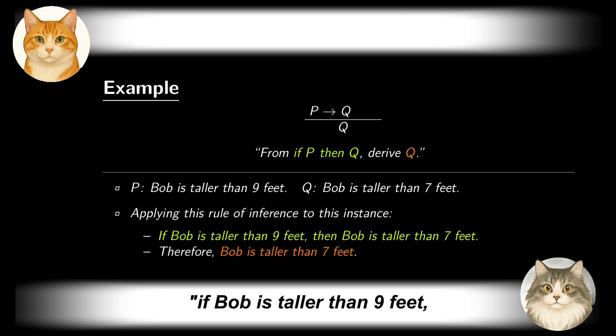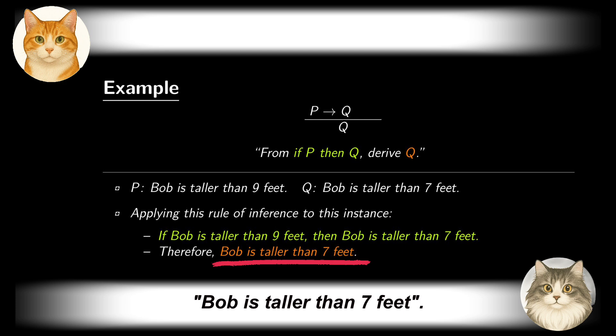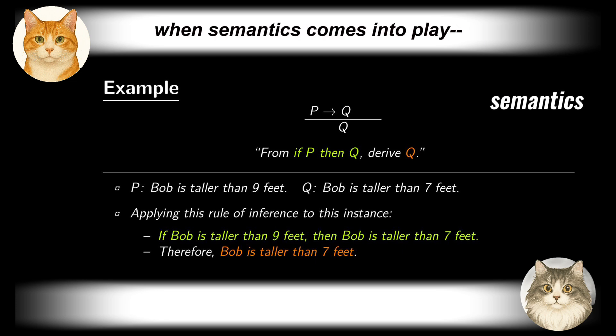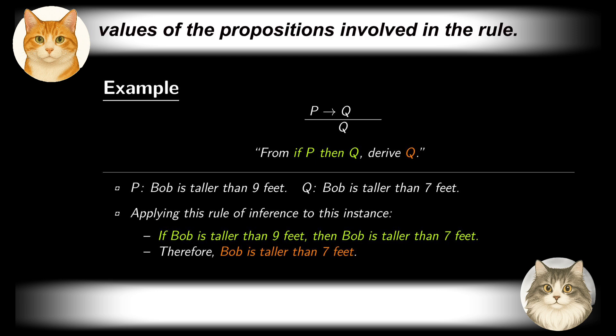If Bob is taller than 9 feet, then Bob is taller than 7 feet. We immediately conclude that Bob is taller than 7 feet. At this level, everything seems perfect. However, so far, everything is merely syntactic, and things become more nuanced when semantics comes into play. That is, when we consider the actual truth values of the propositions involved in the rule.